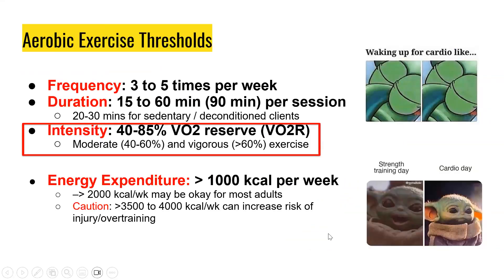For aerobic exercise thresholds, we can prescribe intensity through our FITT principle — that's frequency, intensity, time, type. For frequency, these are your ACSM recommendations for aerobic training. In summary: frequency is three to five times per week; duration is 15 to 60 minutes or up to 90 minutes per session. This can be spread out through different days or within the day — we don't have to complete the duration of aerobic exercise all in one 60-minute block.